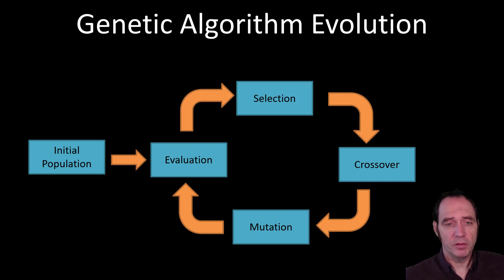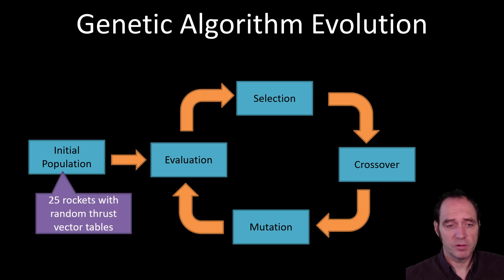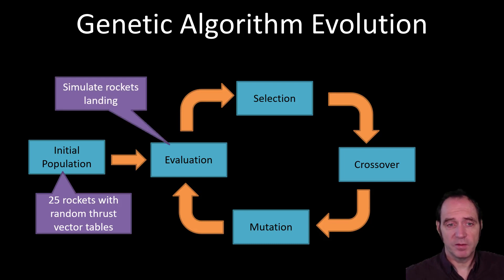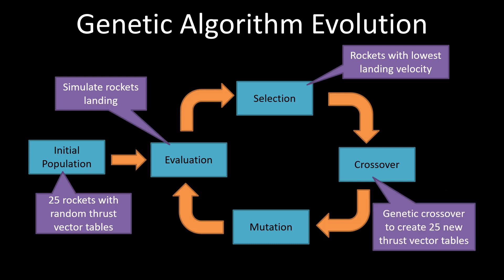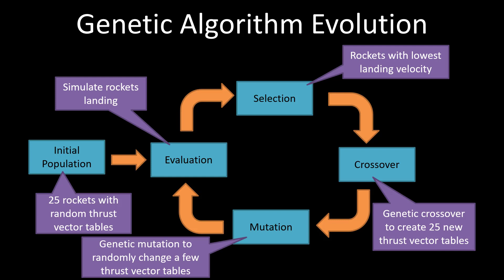In the rocket booster example, I used a genetic algorithm starting with an initial population of 25 rockets using engine thrust at random. We performed evaluation by simulating these 25 rockets in Unity. Selection involved taking the rockets with the lowest landing velocity — even if all crashed, some crashed more softly than others. We used crossover to generate a new generation inheriting from the previous, made random changes to thrust usage, then performed another evaluation. Over a number of generations, the algorithm evolved rockets that could successfully land within that environment.